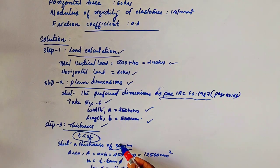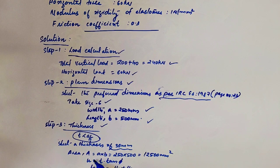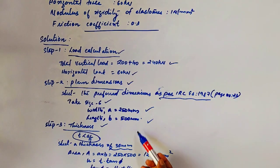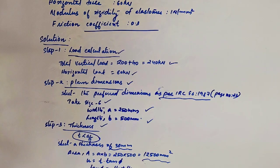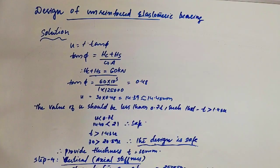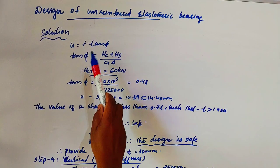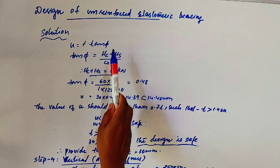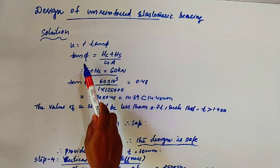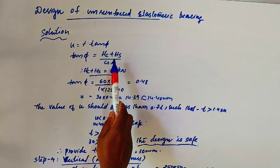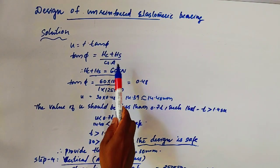Step 3: Thickness. There is a condition T less than A by 5. Select a thickness 30 mm. Then calculate the area A into B, which is 125,000 mm square. Then U equal to T into tan 5.